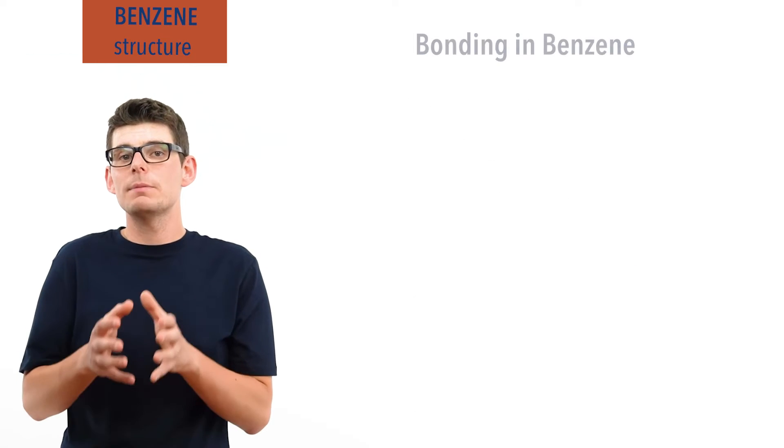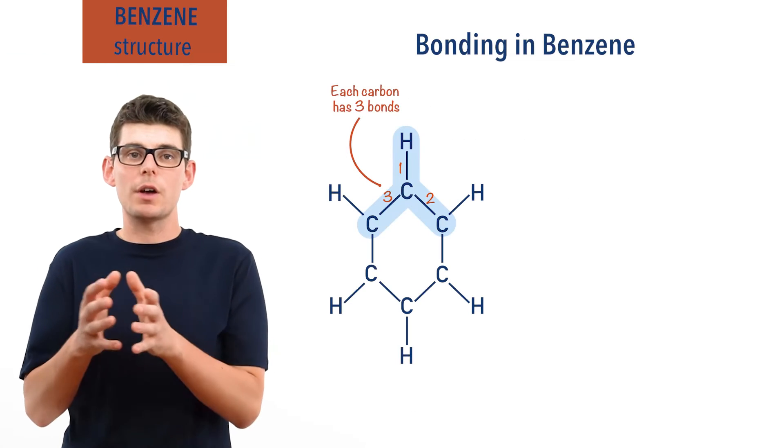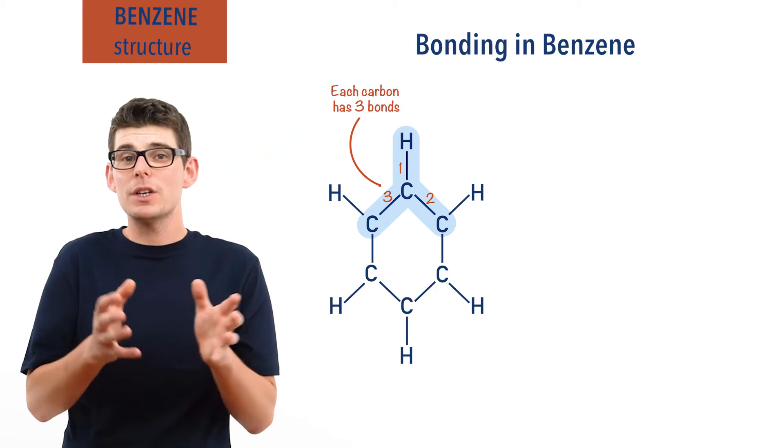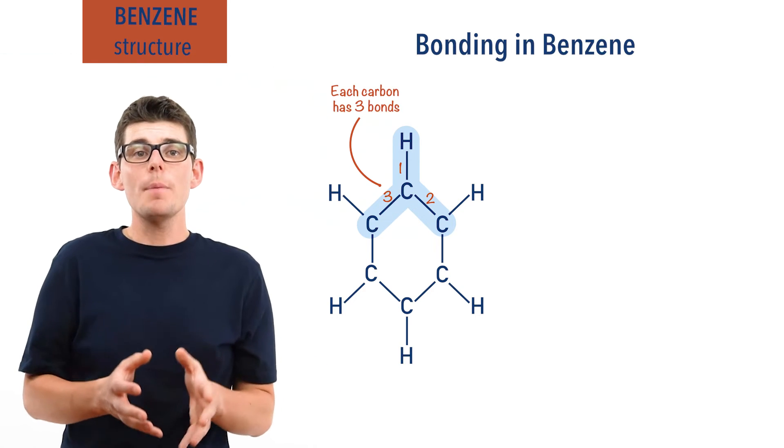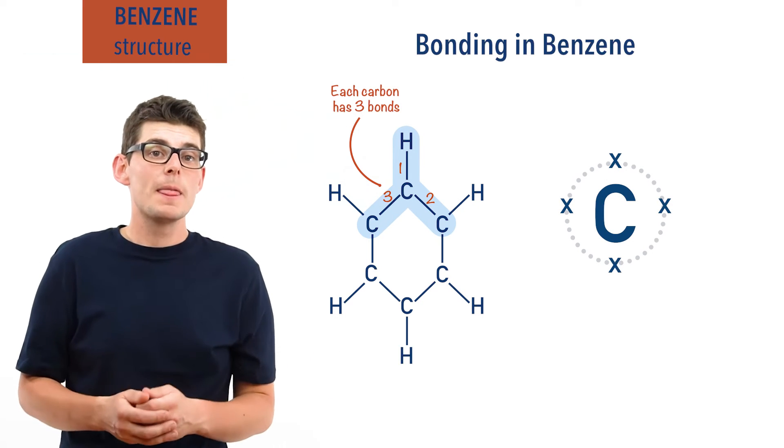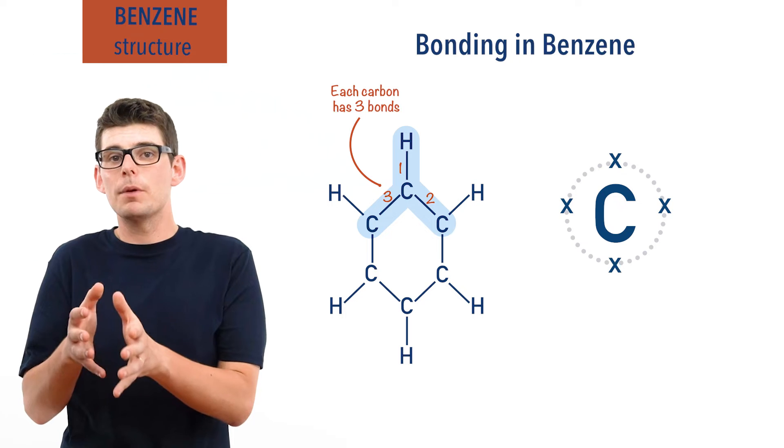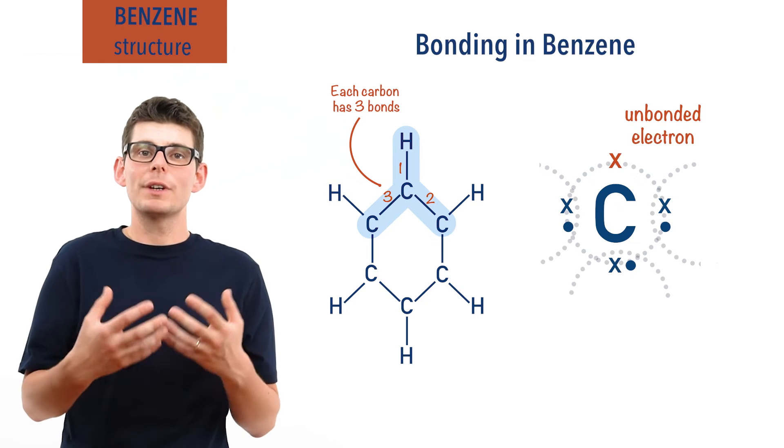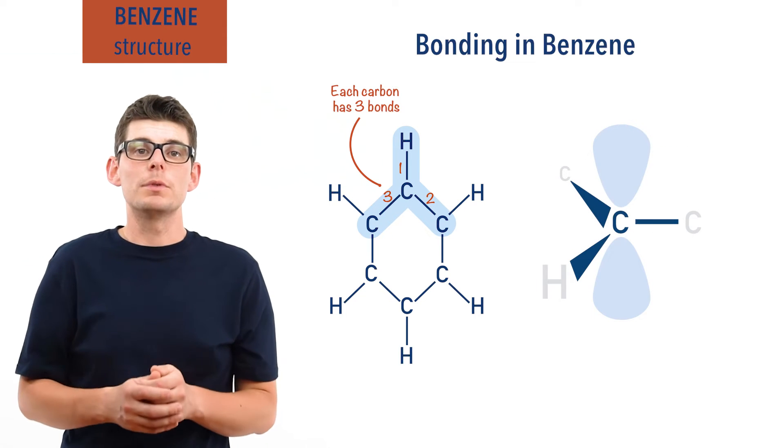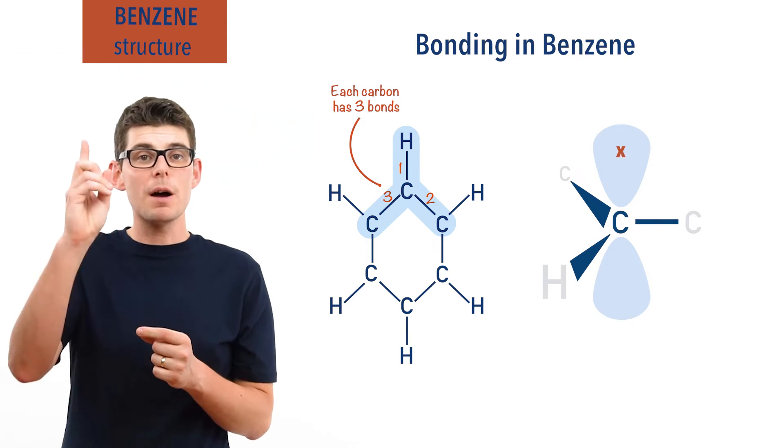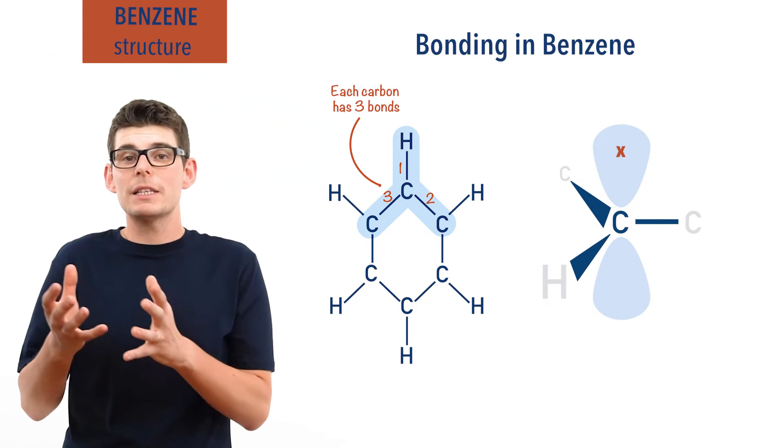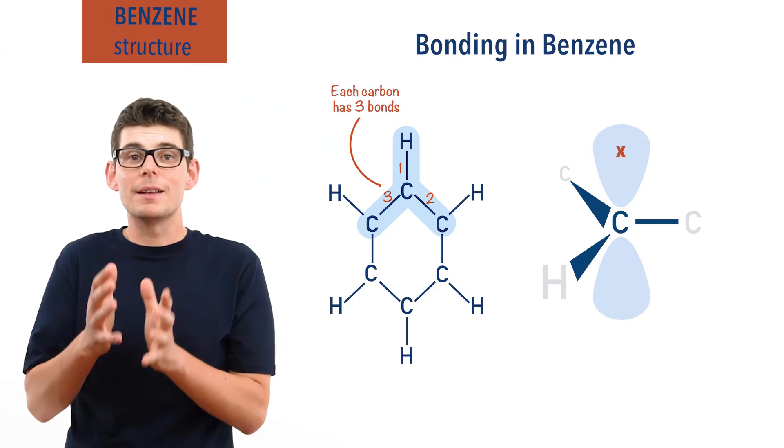We know that each carbon atom in benzene is bonded to two other carbon atoms and a hydrogen atom. This gives three covalent bonds. Carbon has four electrons in its outer shell, a valency of four, meaning when it makes three covalent bonds to other atoms, there is one unbonded electron left over. The unbonded electron exists in p-shaped orbitals which have a lobe pointing above and below the carbon atom. Each carbon atom in benzene will have one of these unbonded electrons.